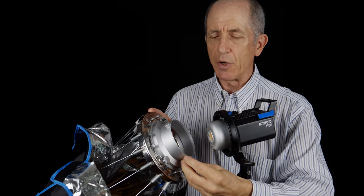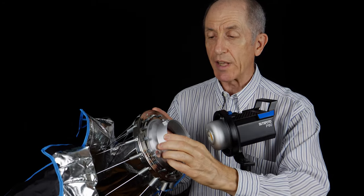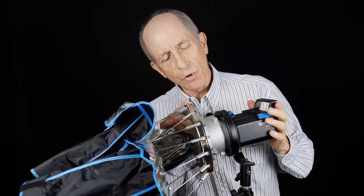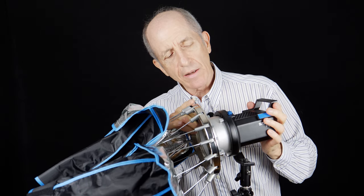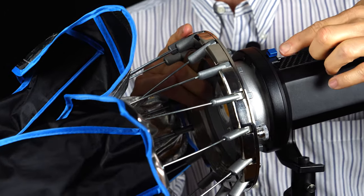This uses a standard Bowens mount, which has these three pips on this ring. It's really heavy duty, and these fit into the fitting on the light, and then rotate until the blue button here clicks.